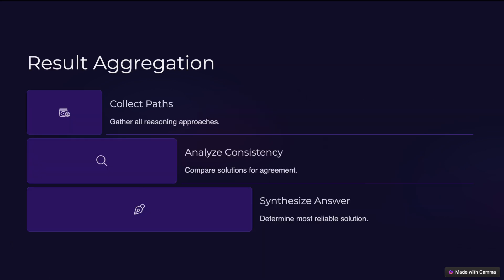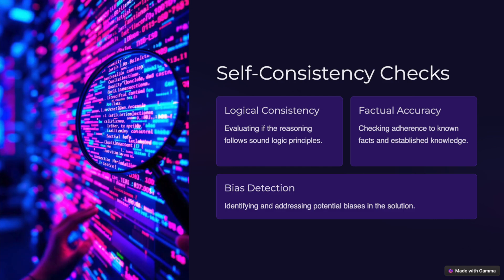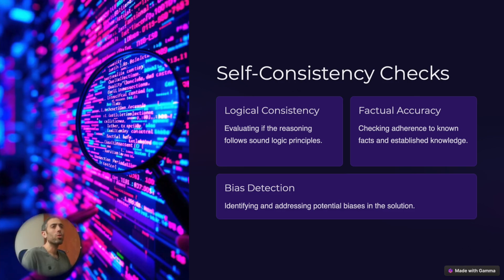Then we want to collect the reasoning approaches to analyze consistency by comparing the solutions for agreement, and determine the most reliable solution. We check logical consistency — evaluating if the reasoning follows sound logic principles — we check factual accuracy, and we check if there is any bias in the solution.